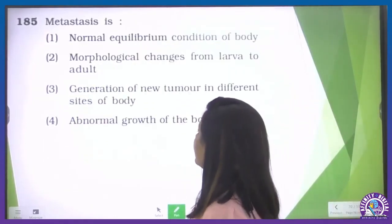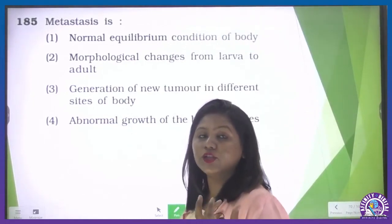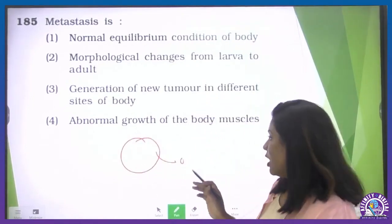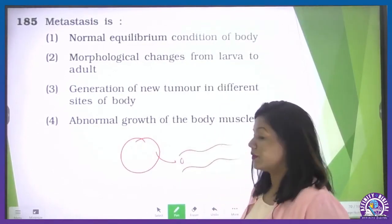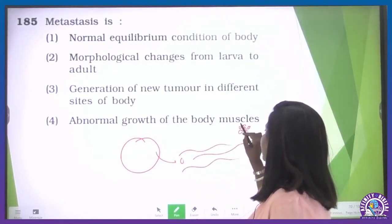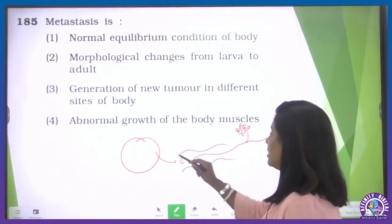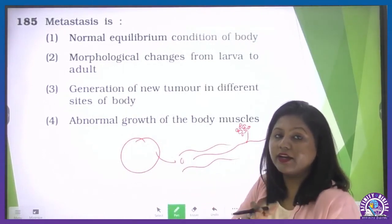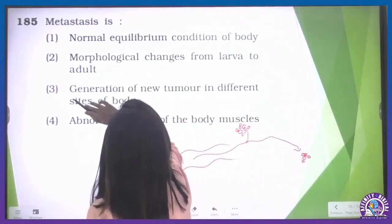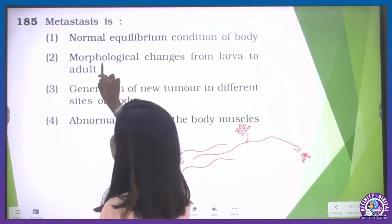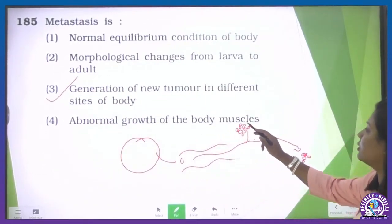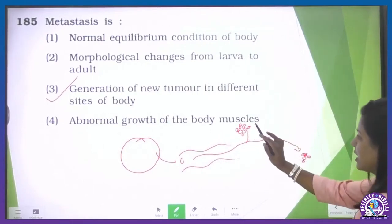Metastasis is a property of cancer cells. The primary neoplasm travels through blood to a different site forming a secondary neoplasm — the migration of cancerous cells from one place to another is known as metastasis. Normal equilibrium of the body — no. Morphological changes from larva to adult — that is metamorphosis, not metastasis. Generation of new tumors in different sites of the body — this is our correct answer. Abnormal growth of body muscle is sarcoma, not metastasis.